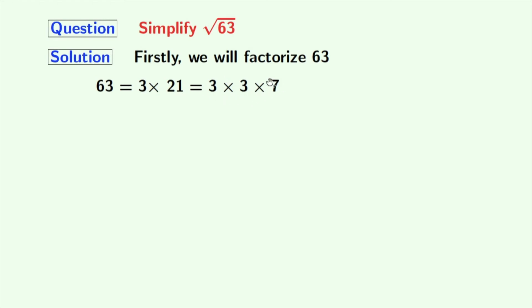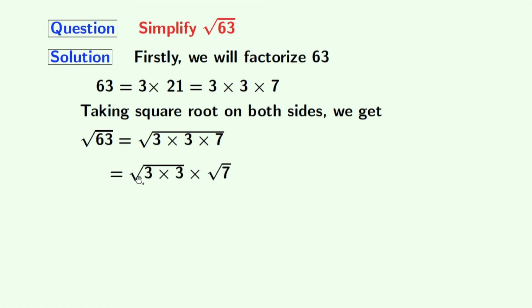Now, taking square root on both sides, we get square root of 63 is equal to square root of 3 times 3 times 7. Now, using grouping, we get square root of 3 times 3 times square root of 7.